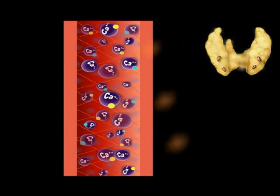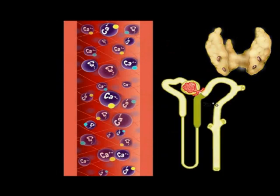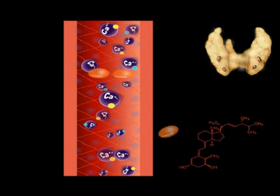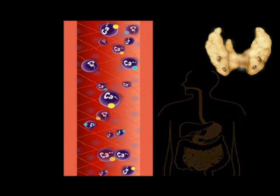Calcitonin, secreted by the parafollicular cells or C-cells of the thyroid gland, inhibits renal tubular absorption of calcium. This is stimulated by vitamin D3 and ingestion of food.